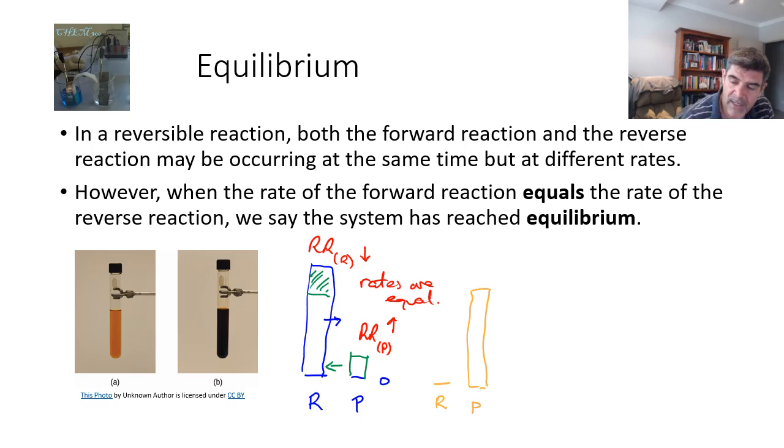It may well be that equilibrium is reached when we have a certain amount of reactant and a certain amount of product. And in fact, we'll look at later examples where we find equilibrium can lie a long way to the reactant side, so lots of reactant and very little product, or a long way to the product side, where we have a large amount of product and very little reactant.